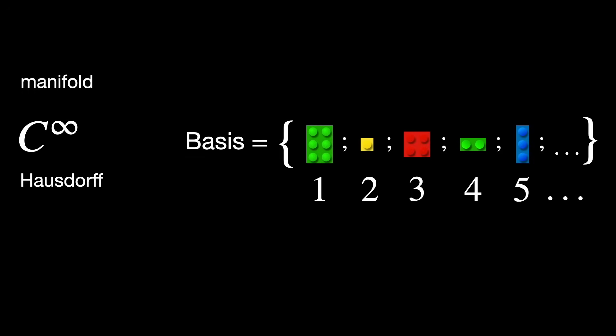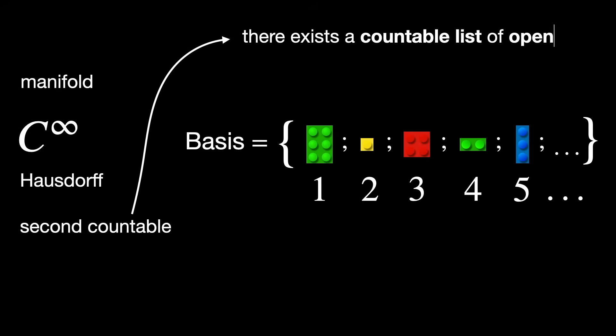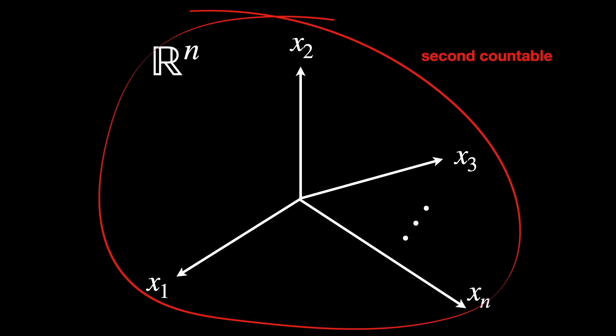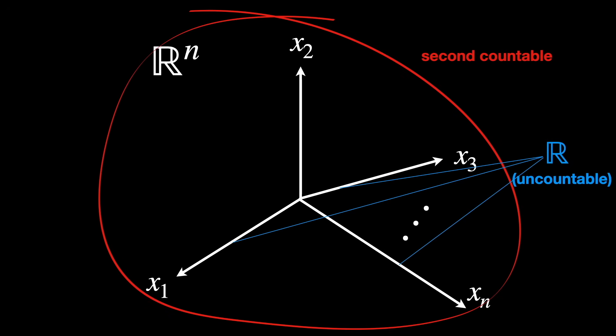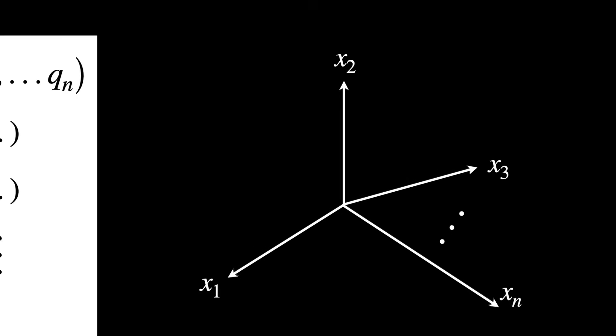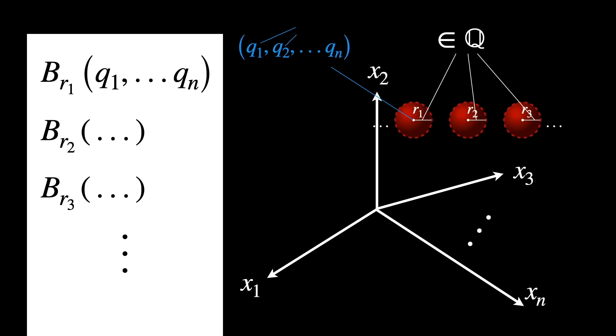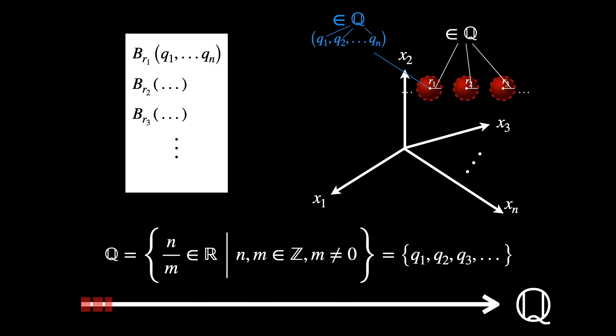This property is better expressed by saying that the space is second countable. In other words, there exists a countable list of open sets such that any open set in the space can be made by gluing some of them together. Being second countable ensures that the space is not too big in a topological sense, and it guarantees that you can use sequences instead of more complicated tools. The classic example is Rⁿ — even though the set of real numbers is uncountable, you can make a countable collection of all open balls with rational center coordinates and rational radius. This is possible because the set of rational numbers, despite being dense, is countable.